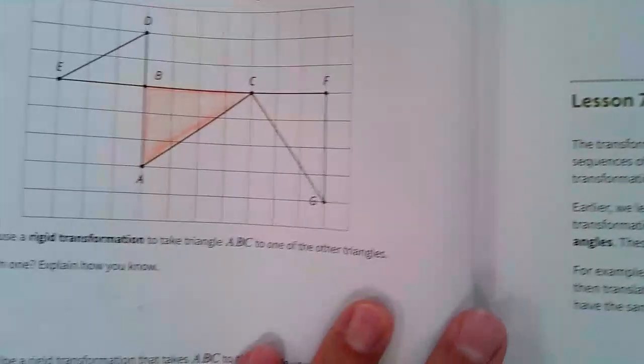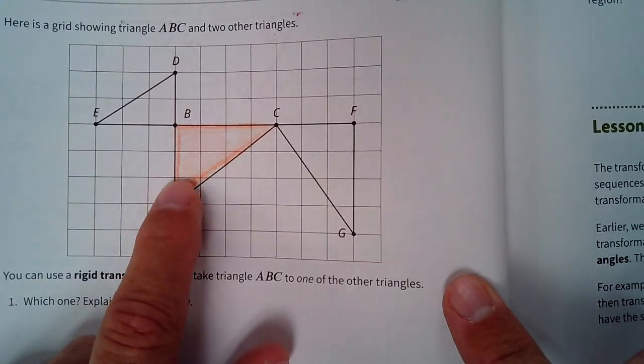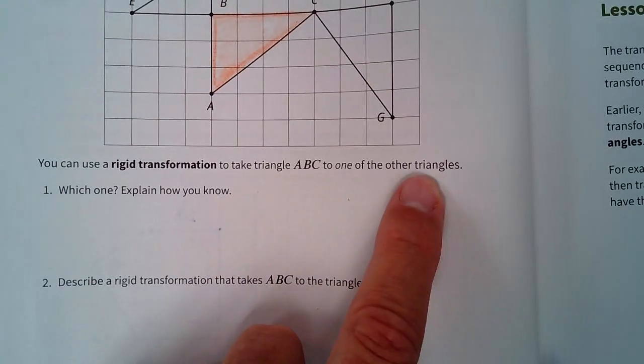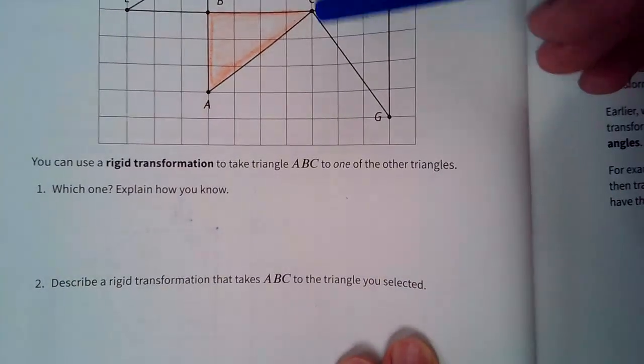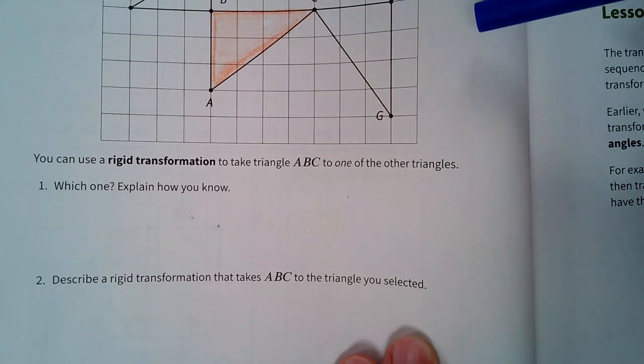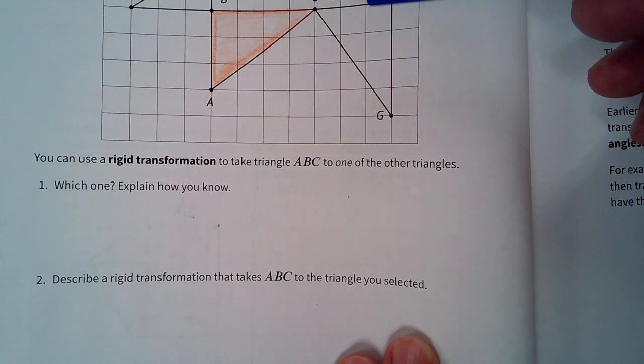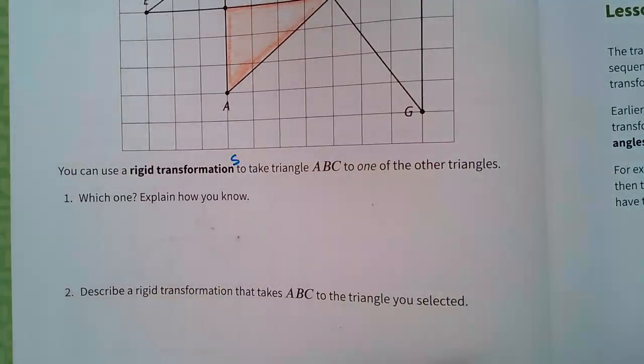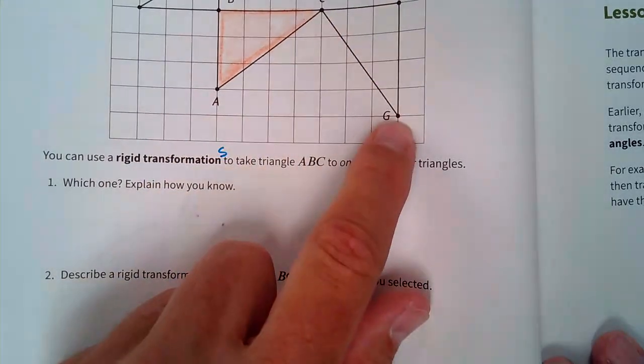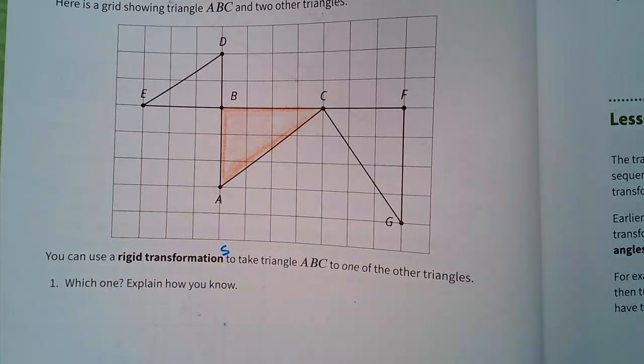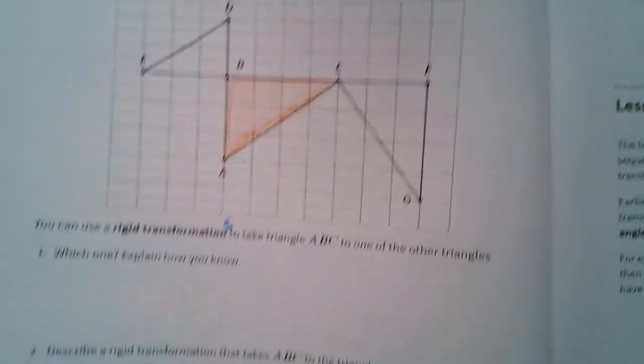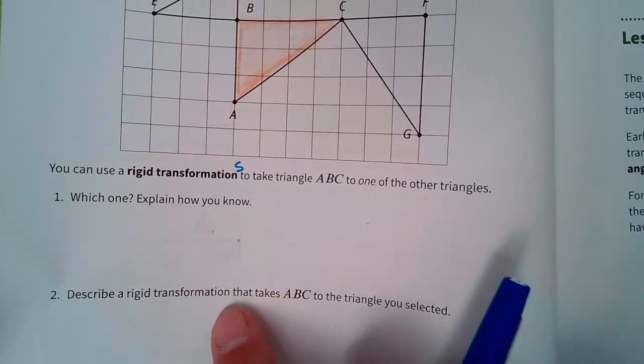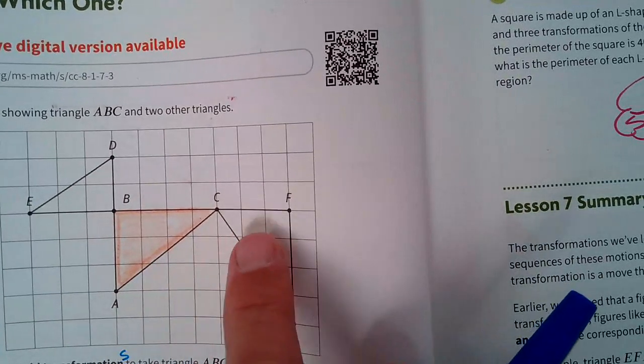All right, turn to page 56. Let's take a look at this real quick here. It says here is a grid showing triangle ABC, and I went ahead and highlighted that, and two other triangles. It says you can use a rigid transformation to take triangle ABC to one of the other triangles. So here's triangle CGF. Here's triangle DEB. Which one can I do some rigid, do a rigid transformation, or transformations, maybe plural, I don't know. Which one can I do that with? Well, obviously this one, CFG. This is smaller. There's no way. You can't do it.